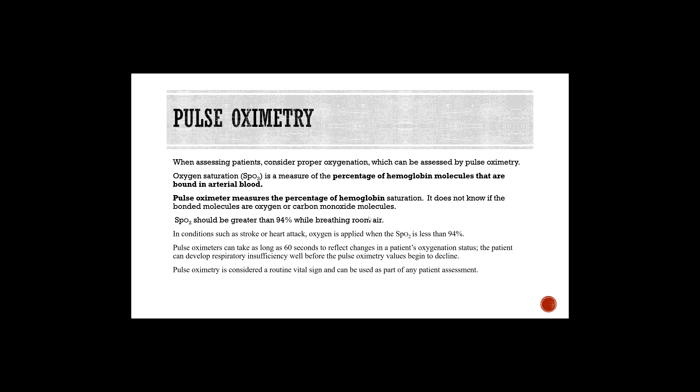Really important: pulse oximeters have a one-minute delay. What you see on the screen reflects what occurred a full minute ago. So you could be looking at 98% — but that's from a minute ago. Is it possible the patient could be deteriorating even though you think you have a good pulse ox? You look down, you write it on your chart — their pulse ox is good — and suddenly that patient's eyes roll back and they become unresponsive. Pulse ox is a good indicator of hemoglobin saturation and oxygen levels, but you're dealing with dated information. You need to keep an eye on that patient.